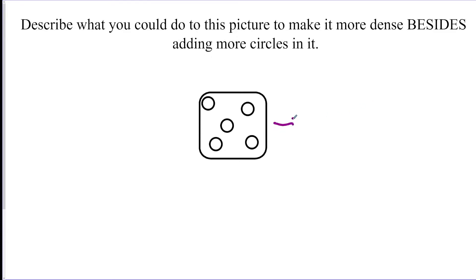So in this case, how can you make this object more packed but not add more circles? It's a little bit of a trick, but the answer is to shrink the box. So if you have the same five circles like this with a smaller box, now overall they're more packed.